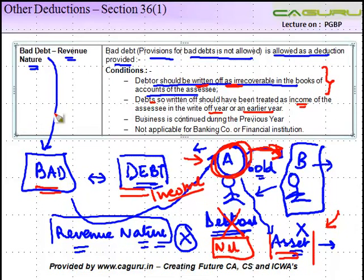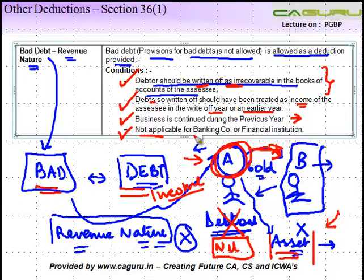The third condition is that the business should be continued during the previous year — this is simple. The fourth condition is that it is not applicable for a banking company or a financial institution; for them, even the provision for bad and doubtful debt is allowable as a deduction subject to certain conditions.